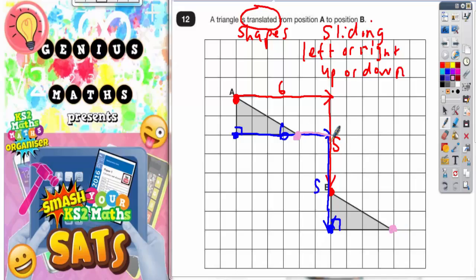So 1, 2, 3, 4, 5, 6 to the right. And 1, 2, 3, 4, 5 down. Keeps us in exactly the same position.